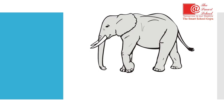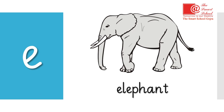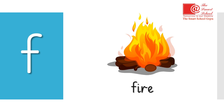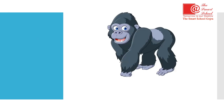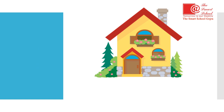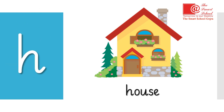What is the beginning sound of elephant? Yes, right — E, elephant. What is the beginning sound of fire? Right — F, fire. What is the beginning sound of gorilla? Yes, right — G, gorilla. What is the beginning sound of house? Yes, right — H, house. Great job!